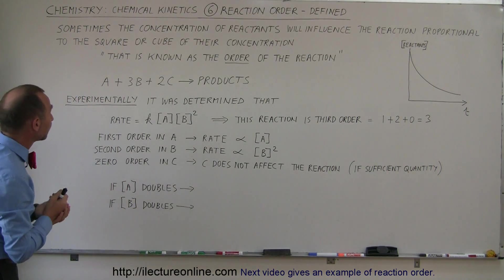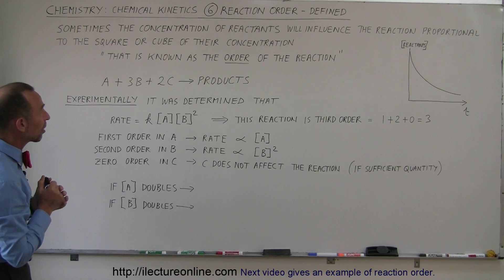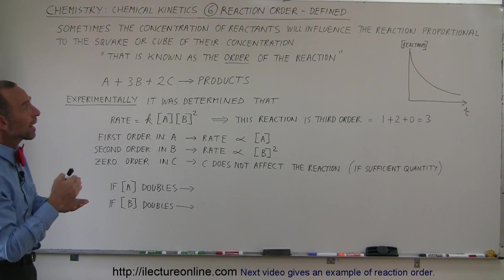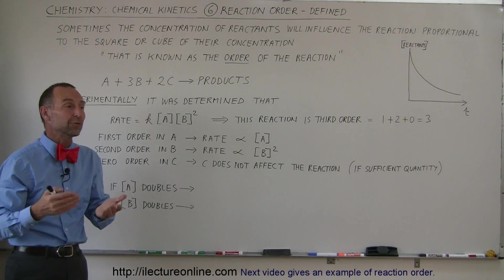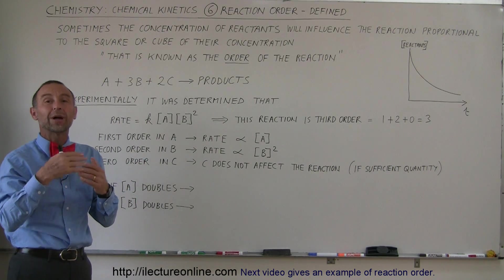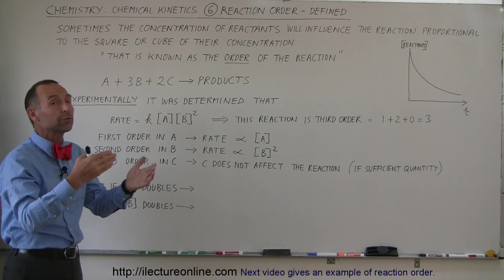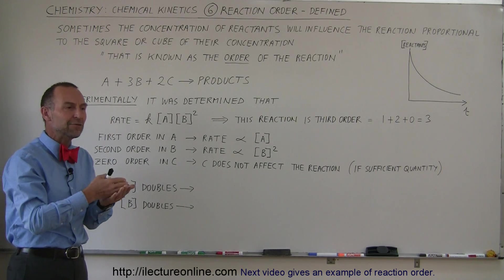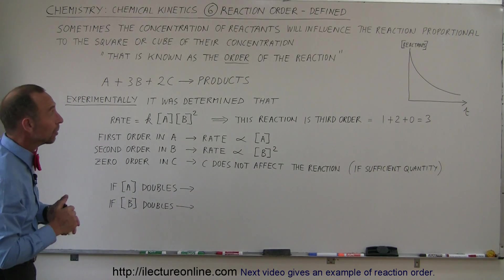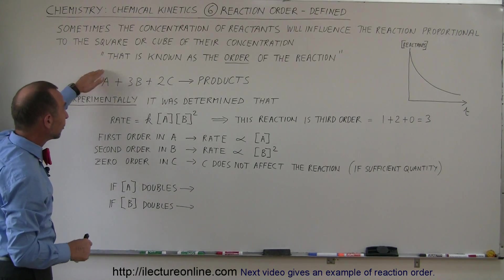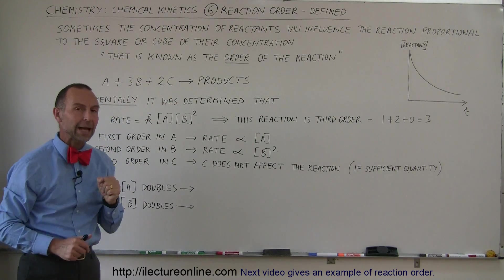So let's read the definition here. It says sometimes the concentration of reactants will influence the reaction proportional to the square or the cube of their concentration. Sometimes it's even to the concentration to the 1.5 power or 2.4 power. Sometimes it's not even like the square or the cube. It can even be something other than an integer number. But whatever that is, that is known as the order of the reaction.